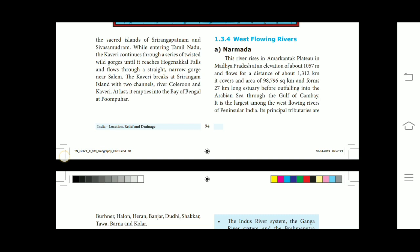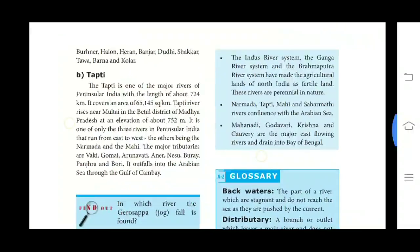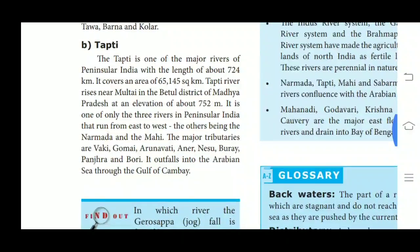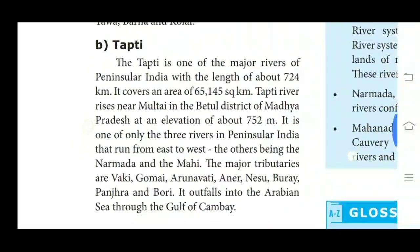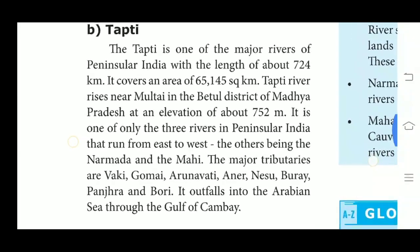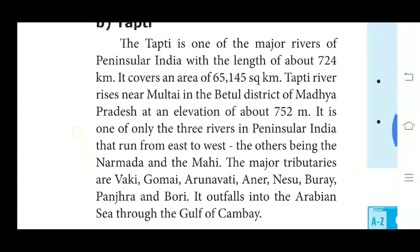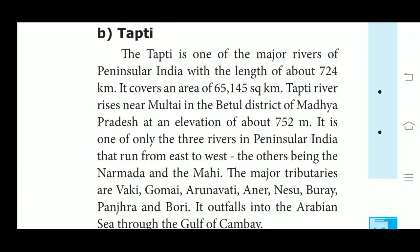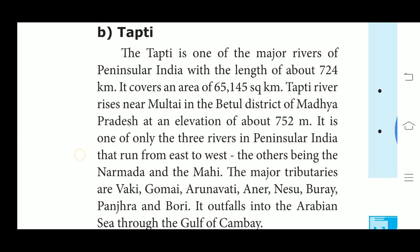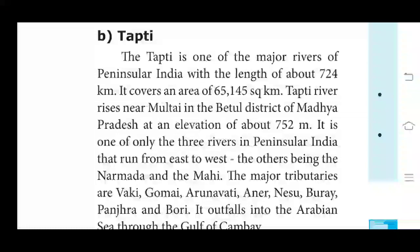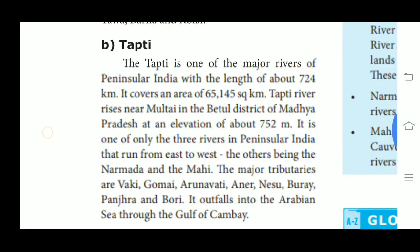Next, we see about river Tapi. The Tapi is one of the major rivers of Peninsular India with a length of about 724 km. It covers an area of 65,145 km². Tapi river rises near Multai in the Betul district of Madhya Pradesh at an elevation of about 752 m. It is one of only three rivers in Peninsular India that flow from east to west, the others being the Narmada and the Mahi.